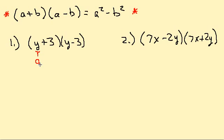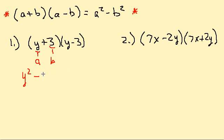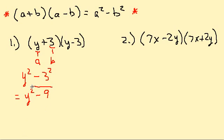So if we look at this — the y is our a and the 3 is our b. We're going to plug these two in for a and b. That gives us y squared minus 3 squared, which equals y squared minus 9. And that's our answer.